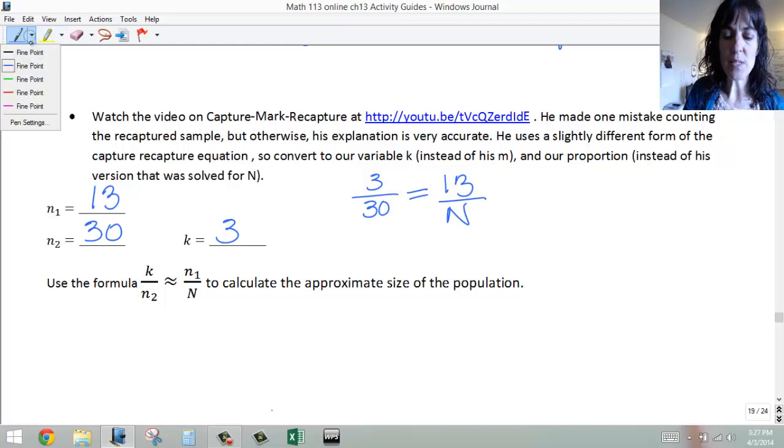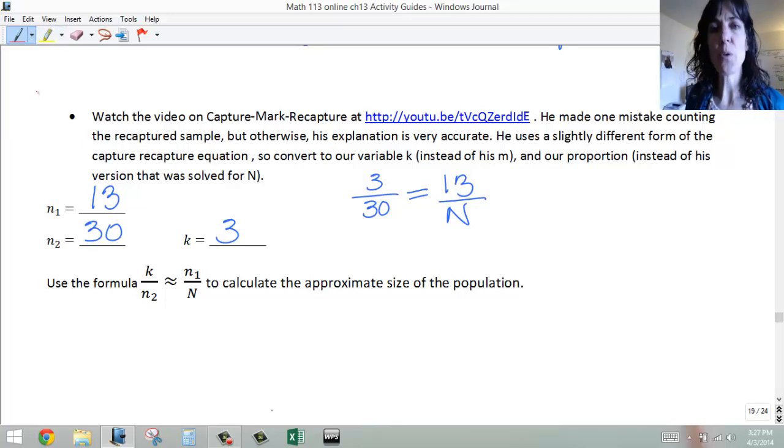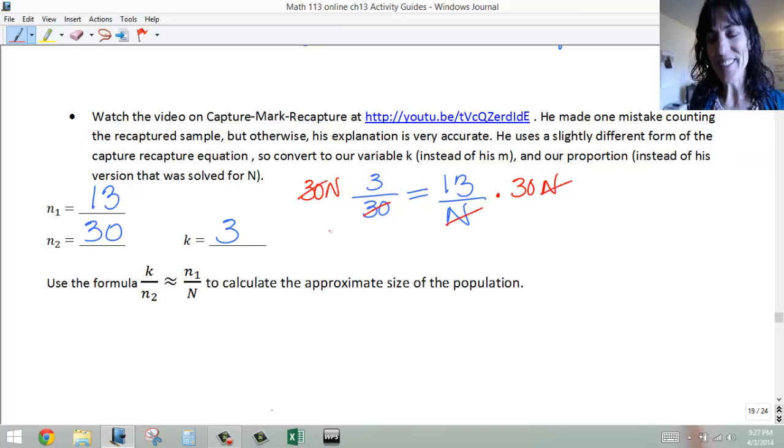And we'll use the same process that we used for the fishes problem to solve this equation, so we'll just multiply both sides by 30n. So the 30 is reduced on the left, the n is reduced on the right, and we're left with no fractions, which was our goal. And we have 3n equals 13 times 30 is 390.